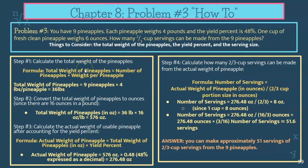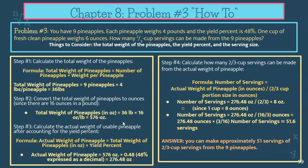The first thing you're going to do is calculate the total weight of the pineapples. You're going to take your nine pineapples — as the scenario states, each pineapple weighs four pounds — so nine pineapples times four pounds per pineapple gives you a total of 36 pounds. That is your as-purchased quantity. Then convert the weight to ounces: there are 16 ounces in a pound, so take 36 pounds and multiply by 16, giving you a total of 576 ounces of pineapple as your as-purchased quantity.